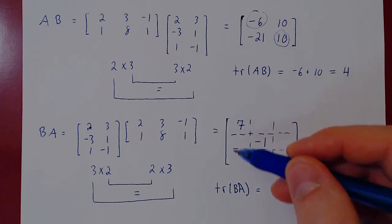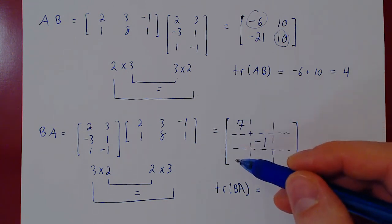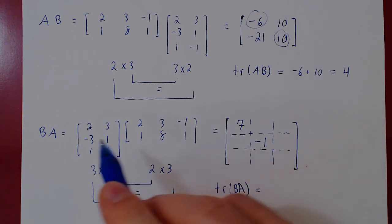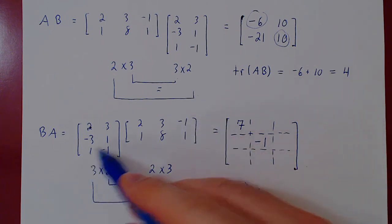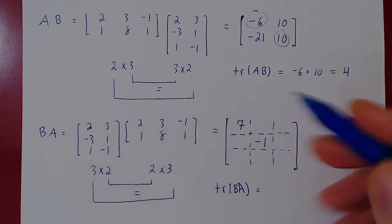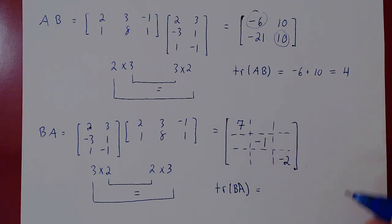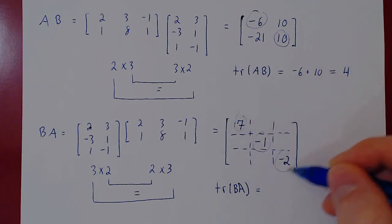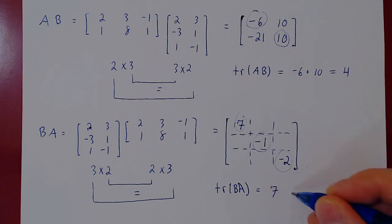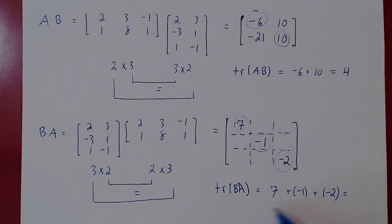And we can now simply add those up to find the trace of BA. It is 7, plus negative 1, plus negative 2. But all this is, is 7 minus 3, which is, again, 4.